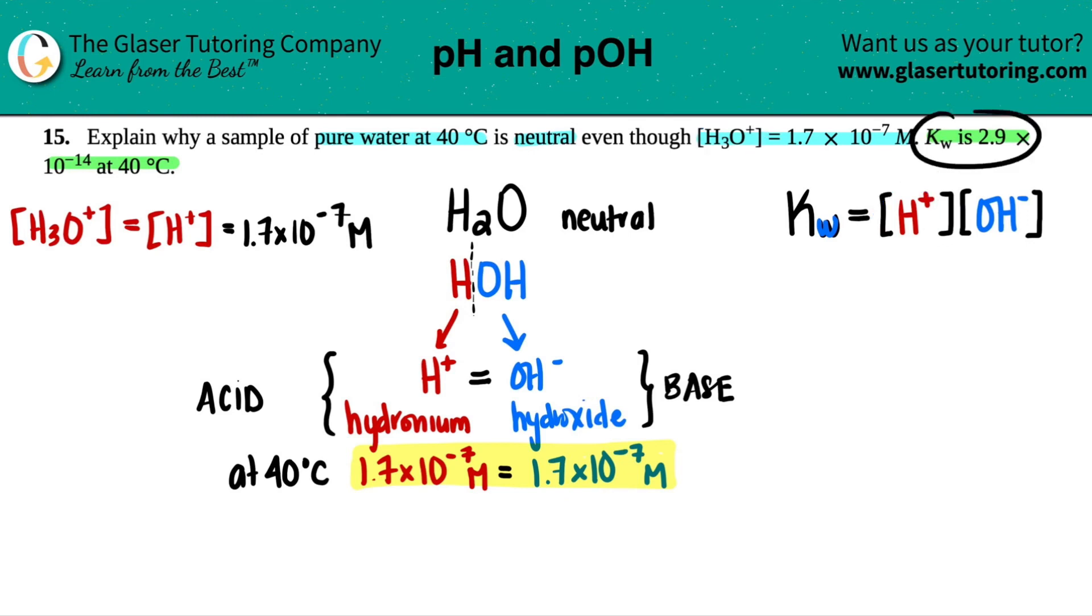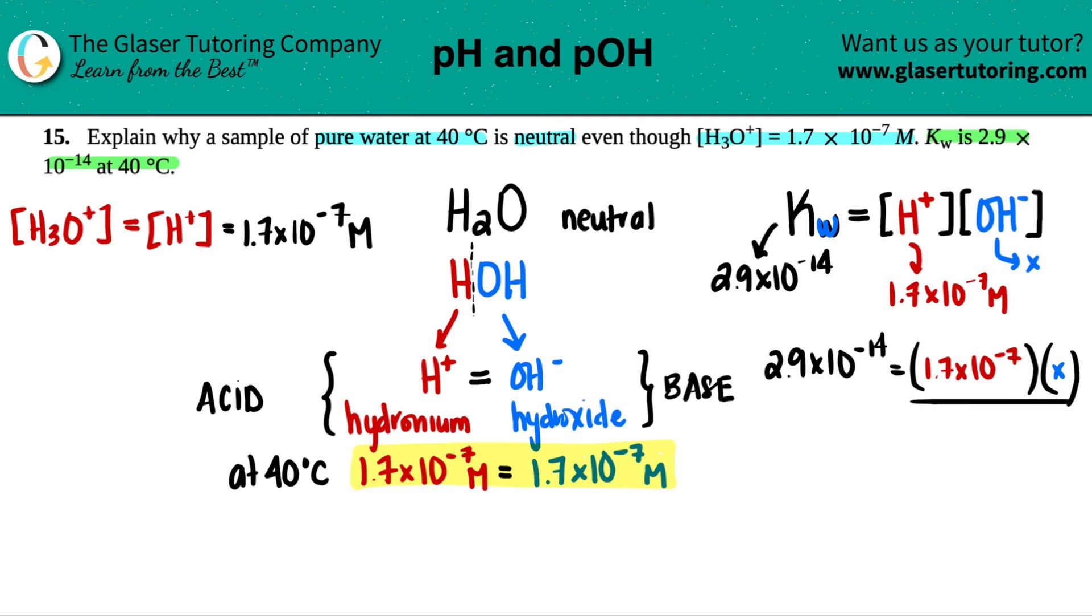So they told us the KW value. They told us that this was 2.9 times 10 to the negative 14th. And they told us that the H plus was 1.7 times 10 to the negative seventh. So in essence, we could find out what the OH minus is, and hopefully we get the same number. So let's give it a shot. 2.9 times 10 to the negative 14th equals the H plus concentration, 1.7 times 10 to the negative seventh, and then times by X, right, which is the base component. Solve for X. We just got to divide by the 1.7 times 10 to the negative seventh on both sides.